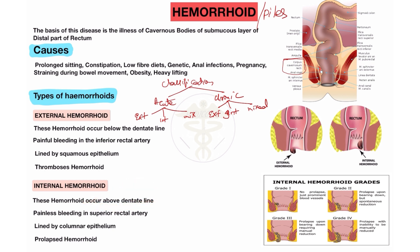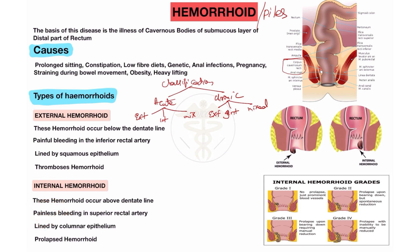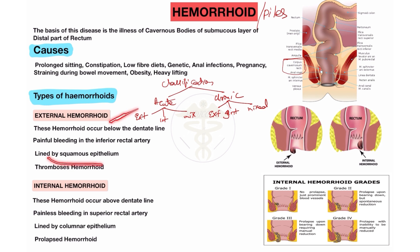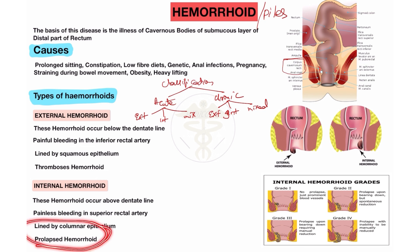When external hemorrhoid occurs, there is painful bleeding — pain occurs in external hemorrhoid. But in internal hemorrhoid, the patient will not feel any pain, so painless bleeding occurs. Painful bleeding involves the inferior rectal artery in external hemorrhoid, while painless bleeding involves the superior rectal artery in internal hemorrhoid. External hemorrhoid is lined by squamous epithelium, while internal hemorrhoid is lined by columnar epithelium. Thrombosis occurs in external hemorrhoid, but prolapsed hemorrhoid occurs in the internal type.